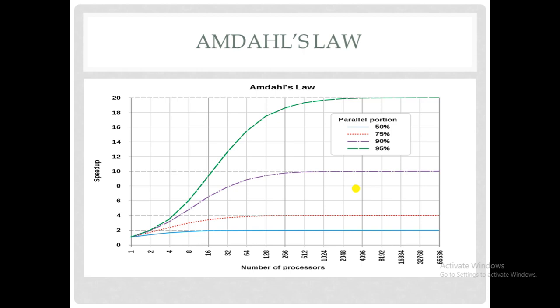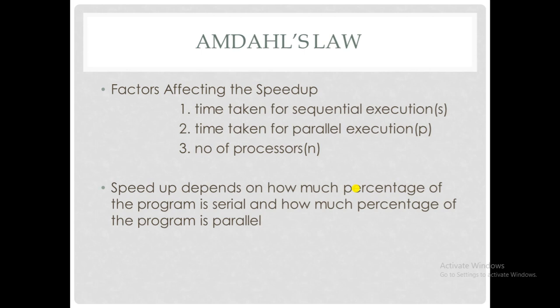Amdahl's Law says there are other factors which affect speedup. These are: first, the time taken for sequential execution; second, the time taken for parallel execution; and third, the number of processors. Programs are made for different data structures. The serial part includes traversal of linked lists and arrays, which proceed one after another. The parallel part includes concurrent operations like graphs and trees. Amdahl's Law states that speedup depends on what percentage of the program is serial and what percentage is parallel.